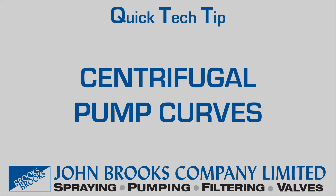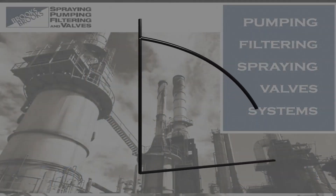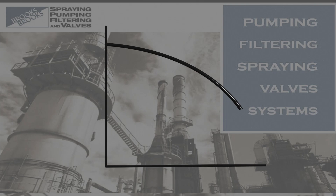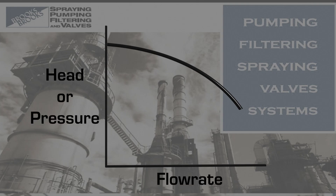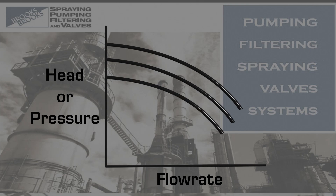Quick Tech Tip on centrifugal pump curves by The John Brooks Company. Pump curves in general represent a pump's ability to develop flow with respect to pressure or head. There can be many separate curves shown on the same plot, each usually representing a change in pump speed or impeller diameter. In this case, the pump speed remains constant and we are varying the impeller diameter.